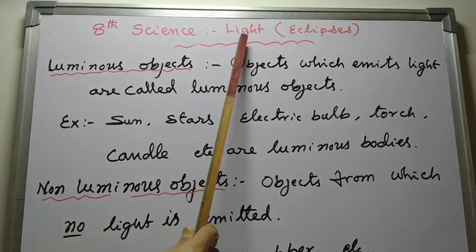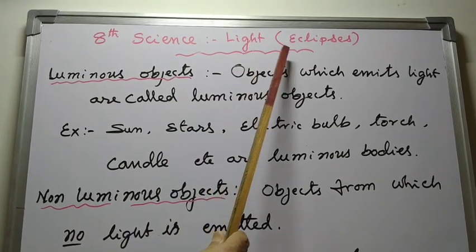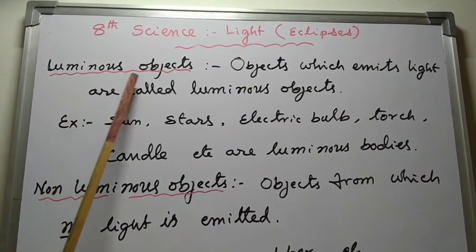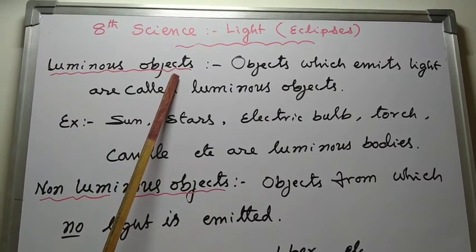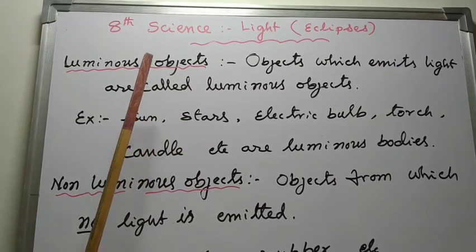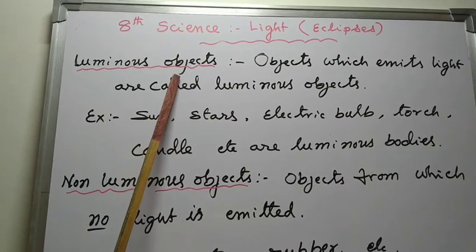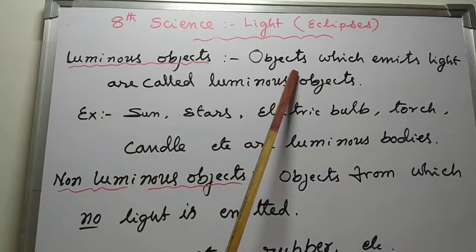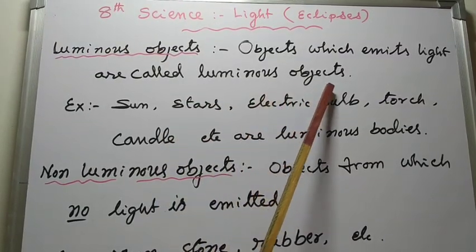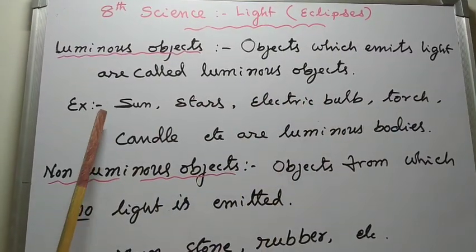Eighth Standard Science: Light and Eclipses. Luminous Objects - Light-emitting objects are called luminous objects, or objects which emit light. For example: